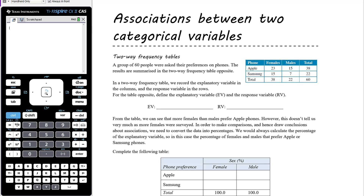When we have two categorical variables, we can represent that data in a two-way frequency table like the one we're seeing here. This table shows data from a survey of 60 people asked about their phone brand preference. When we use a two-way frequency table, we generally record the explanatory variable in the columns. Here we're trying to see whether the sex of someone affects the phone brand they prefer, so sex is the explanatory variable in the columns, and phone brand preference is the response variable in the rows.